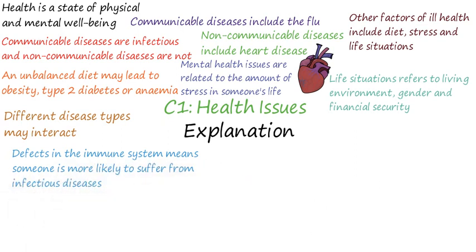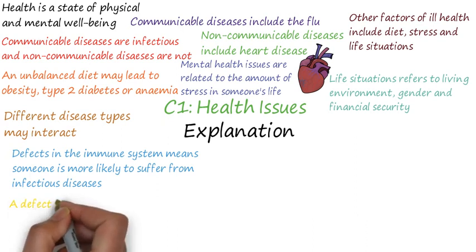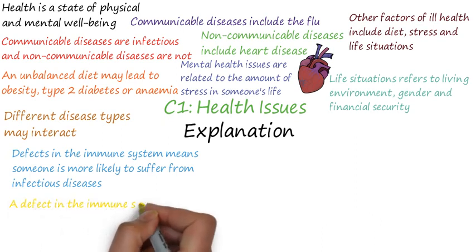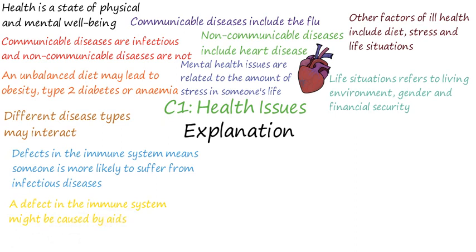Defects in the immune system mean someone is more likely to suffer from infectious diseases. The immune system helps you to get better when you're ill. A defect in the immune system might be caused by AIDS — this is an example of how one disease can lead to another.